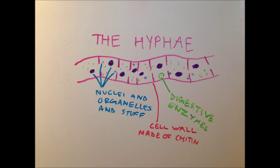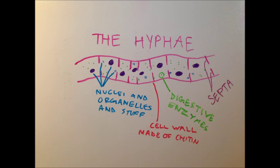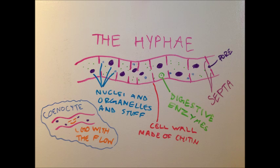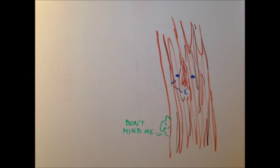Depending on the type of fungi, the hyphae may or may not be divided further into smaller cells with pores for fluid movement of organelles. The structures that divide the hyphae into cells are called septa, or cross-walls. A particular example of a fungus that doesn't have these walls is the coenocytic fungus — a coenocyte has a long body of cytoplasm holding many nuclei and organelles.